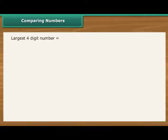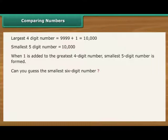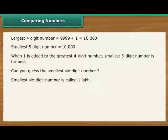The largest four-digit number is 9,999. What should be added to this number to make the smallest five-digit number? The answer is, we need to add 1. Let us find out. On adding 1 to 9,999, we get 10,000, which is the smallest five-digit number. Can you guess the smallest six-digit number? The smallest six-digit number is 1 lakh.